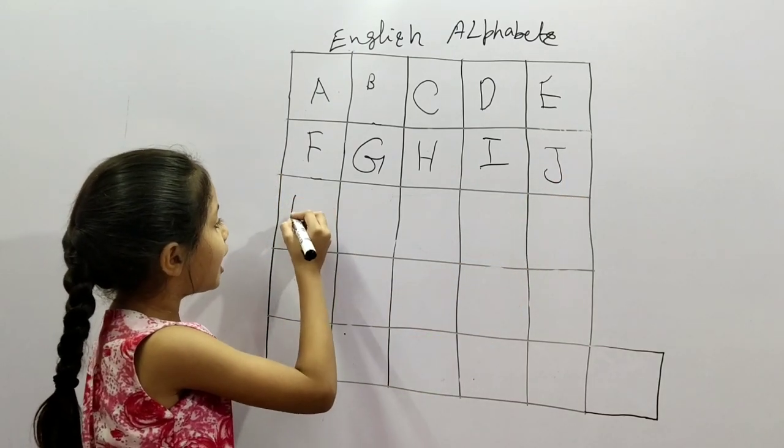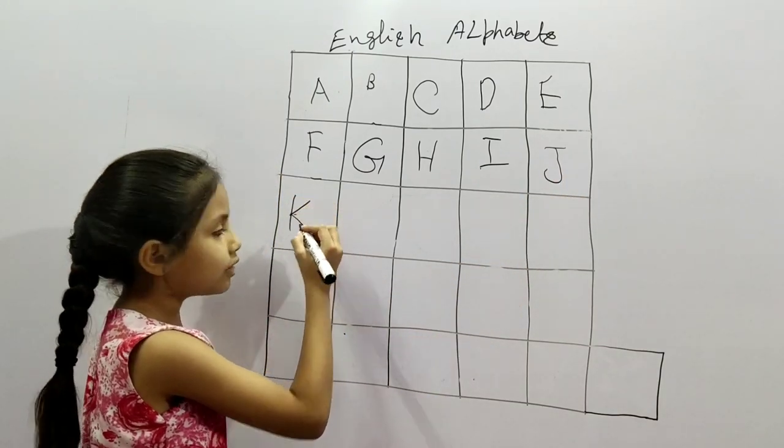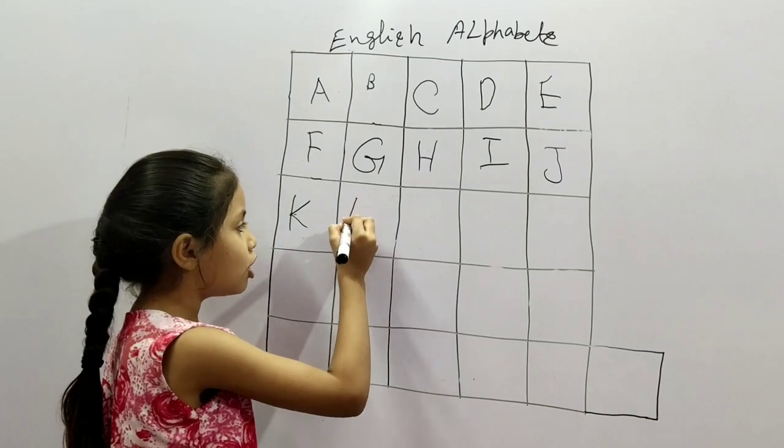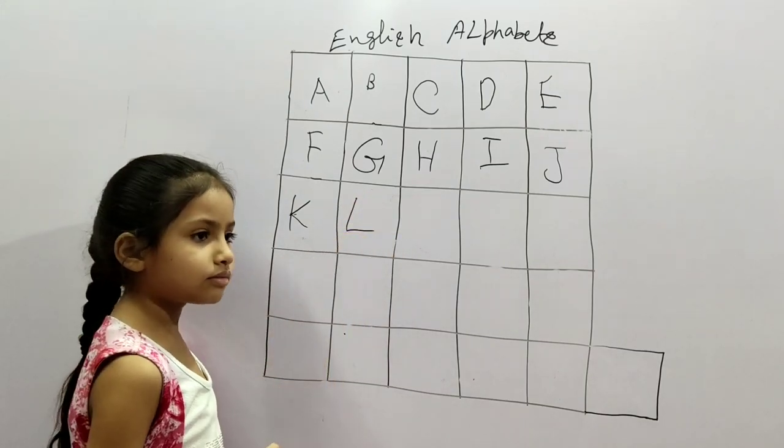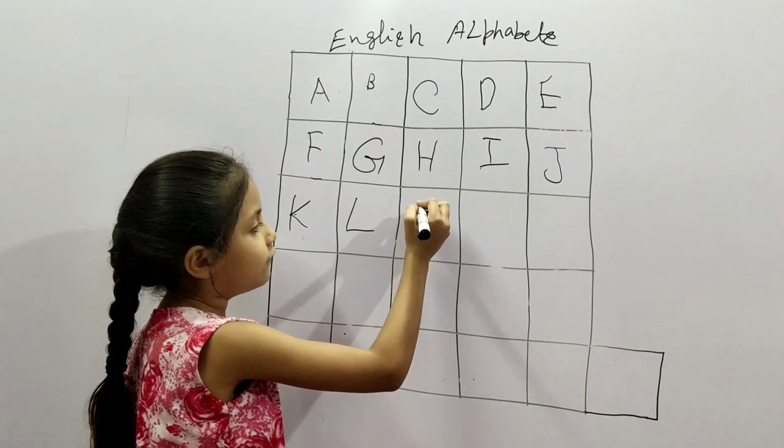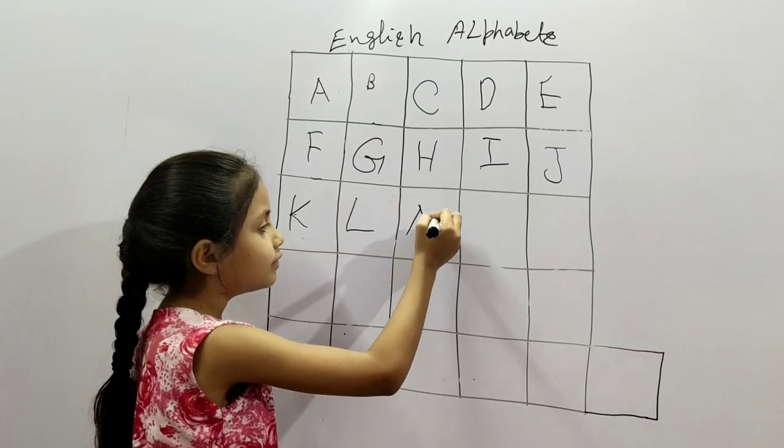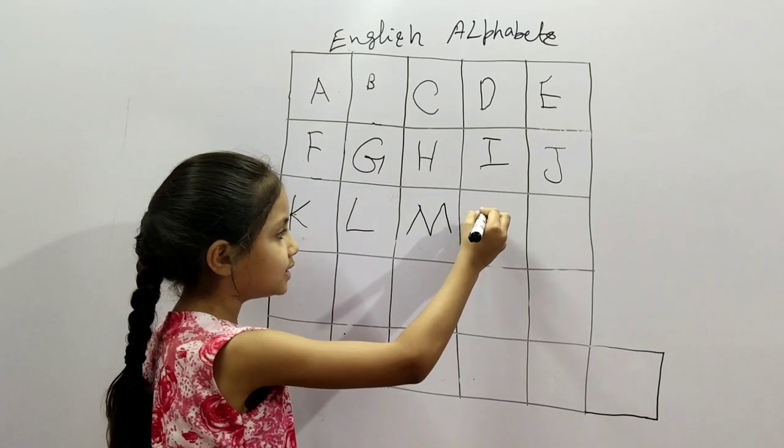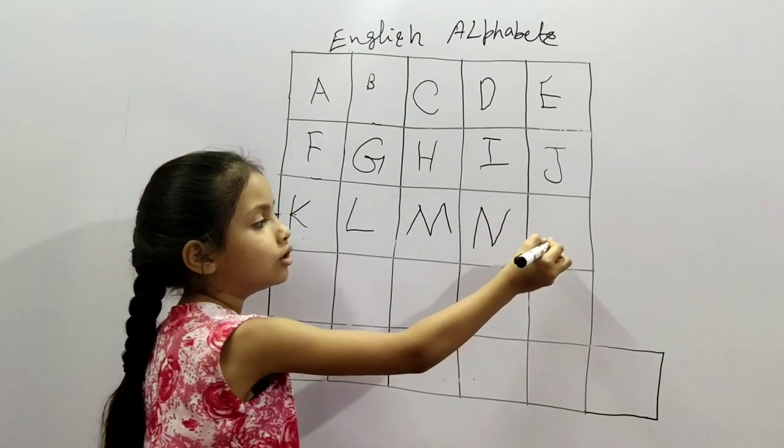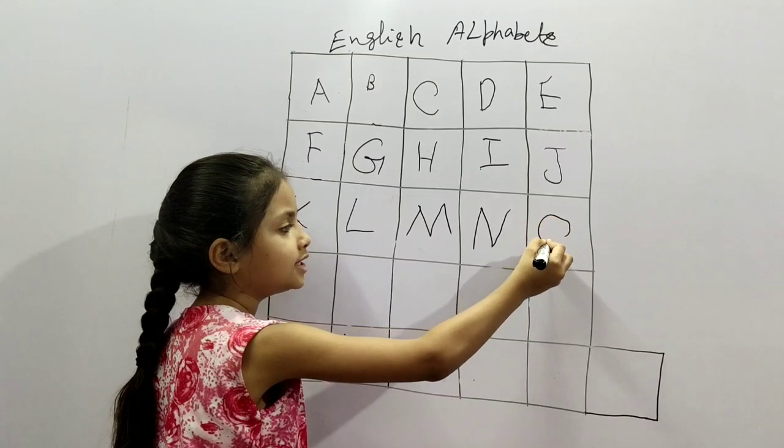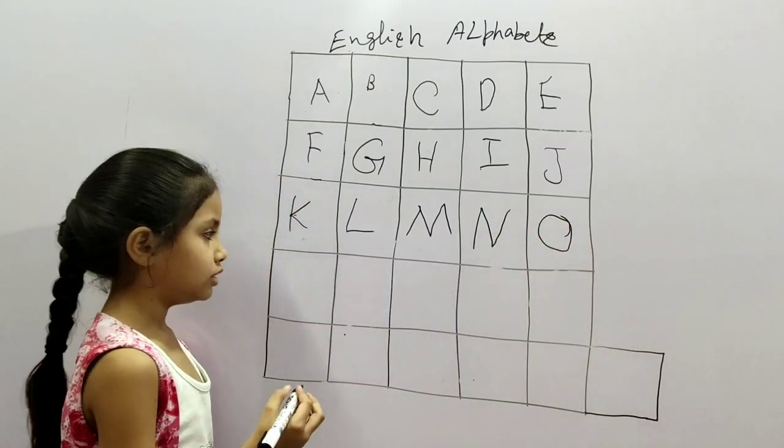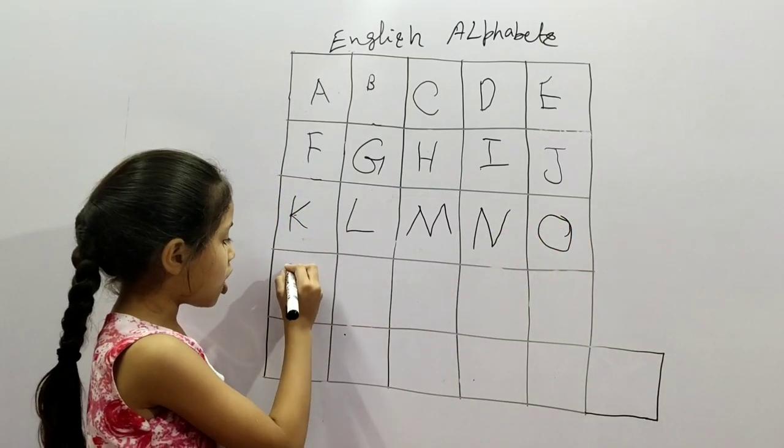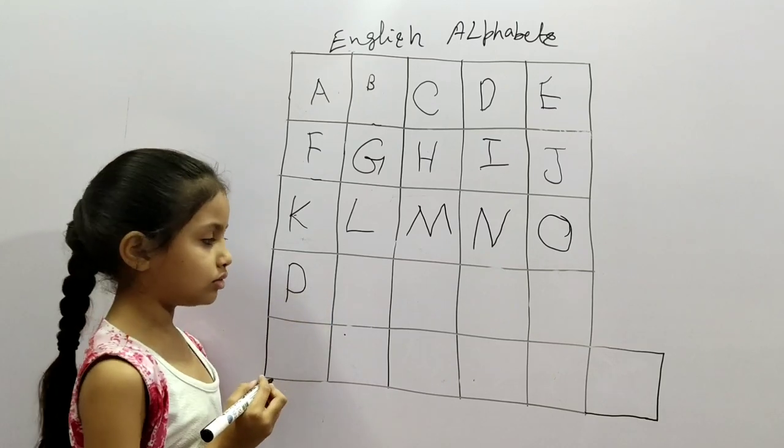K for kite, L for lion, M for monkey, N for nest, O for orange, P for peacock.